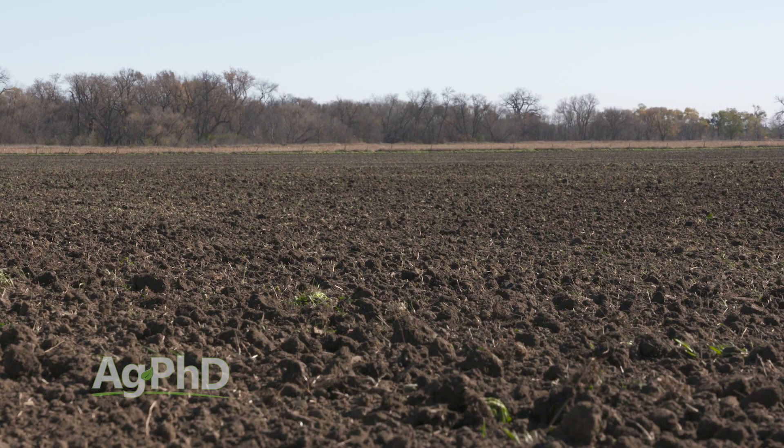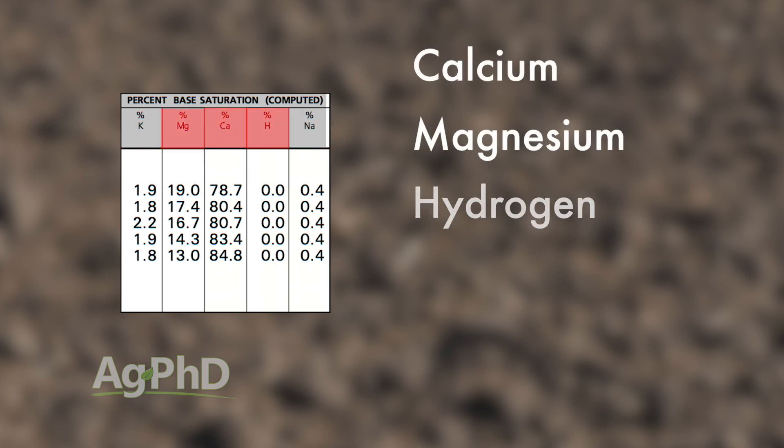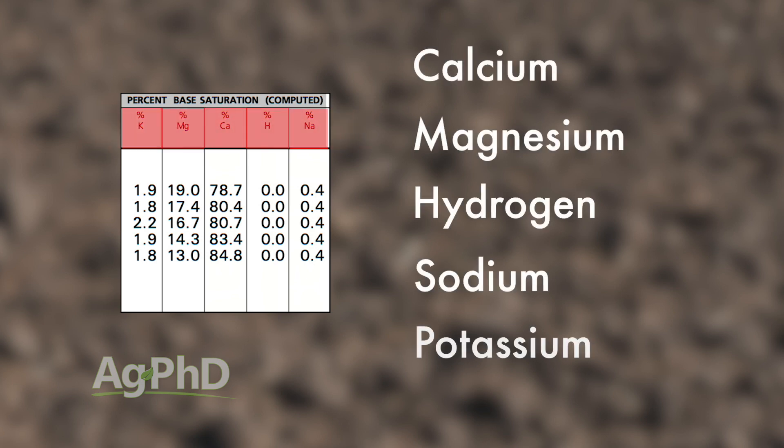That's why we look at base saturation — it tells us, in relation to everything else, where are we at? The base saturation test on a soil test is incredibly important information to have. Wherever you get your soil testing done, make sure you request a base saturation test as well. It's the measurement of five different nutrients against each other as a percentage — always adding up to 100% — covering calcium, magnesium, hydrogen, sodium, and potassium.